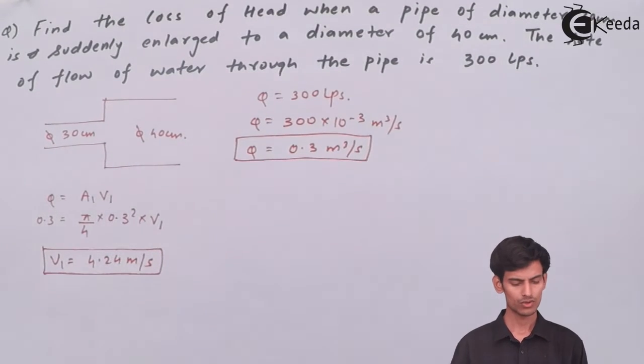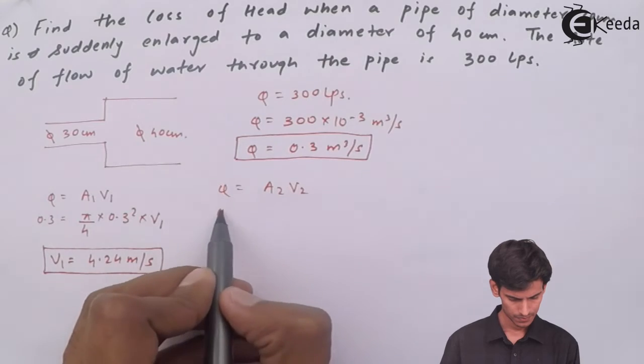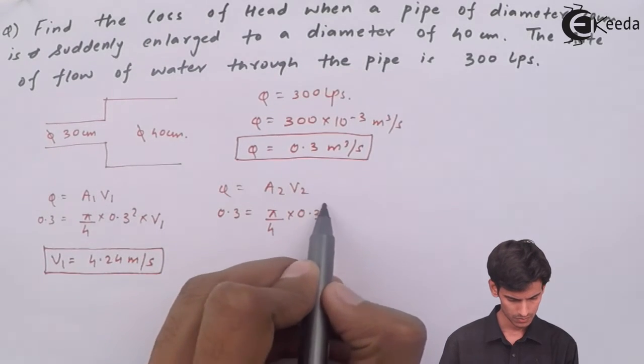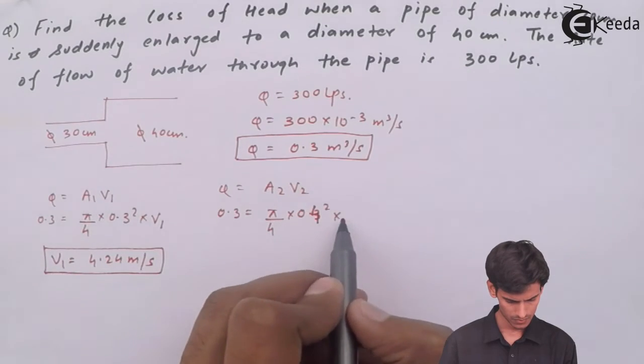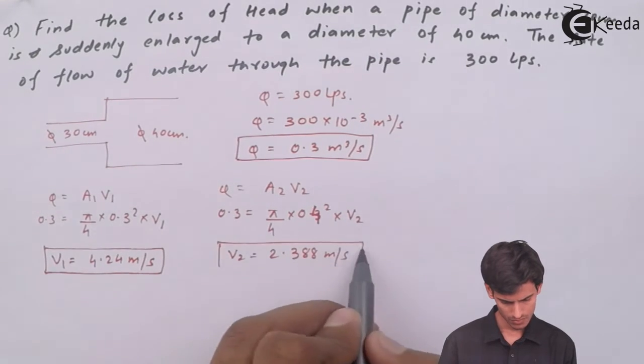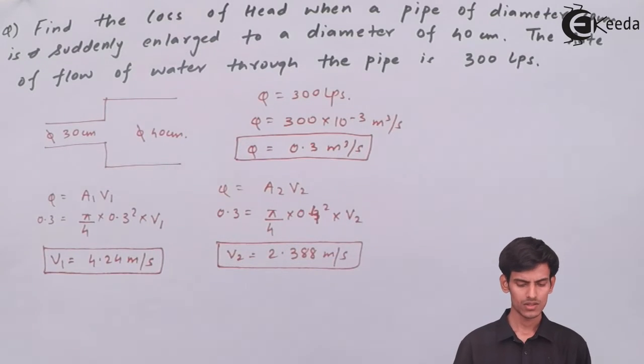The value of v1 comes out to 4.24 meters per second. Now let's calculate the value of v2. The value of v2 comes out to 2.388 meters per second.